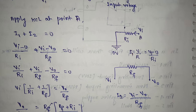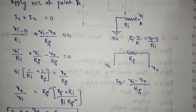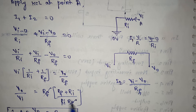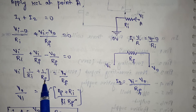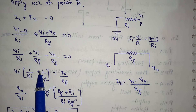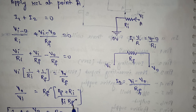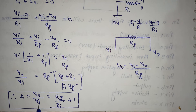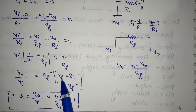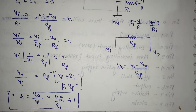Taking LCM of RI and RF on the left side: VI times (RF plus RI) divided by (RI times RF) equals V-naught over RF. The RF cancels, so the gain A equals V-naught divided by VI equals (RF plus RI) divided by RI, which simplifies to 1 plus RF over RI. This is the formula for the gain of the non-inverting amplifier. Thank you.